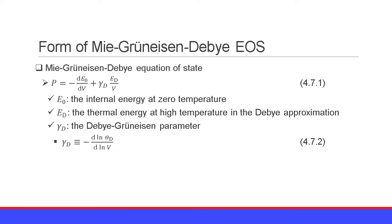The Mie-Grüneisen Debye equation of state has this formula. The pressure is equal to minus dE0 over dV plus γd times Ed over V. E0 is the internal energy at zero temperature, and Ed is the thermal energy at high temperature in the Debye approximation. γd is the Debye Grüneisen parameter, which is defined as minus the derivative of the natural logarithm of Debye temperature with respect to the natural logarithm of volume — equation 4.7.2.